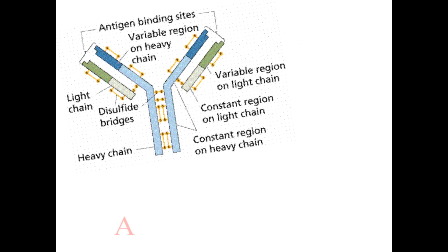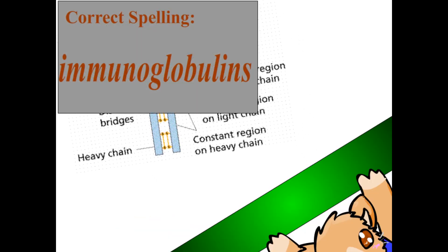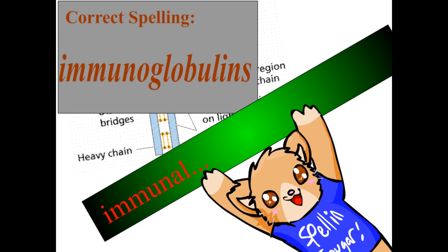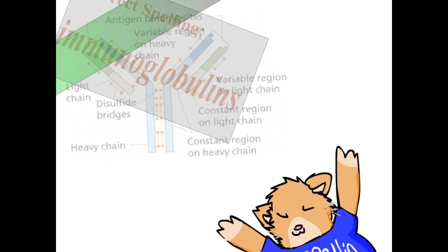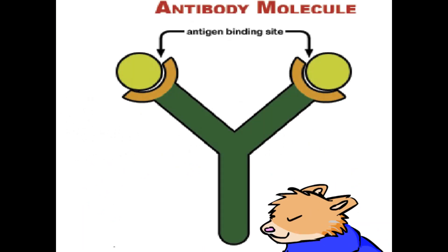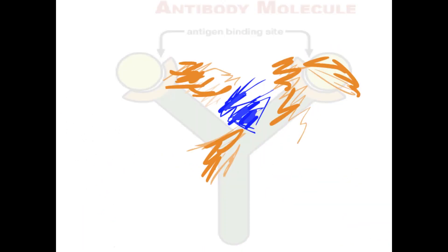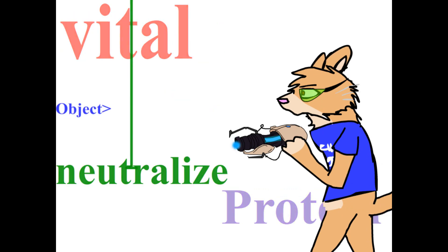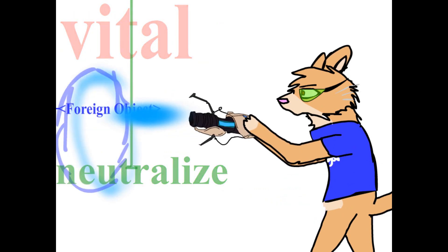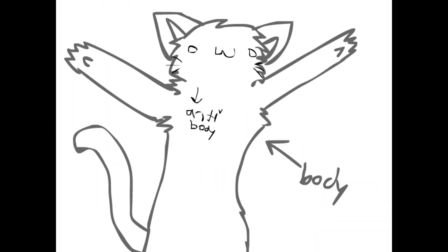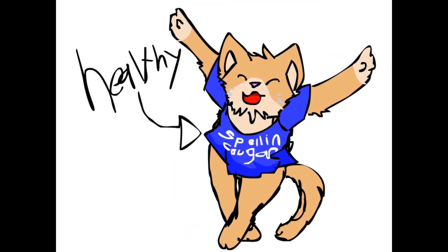This is the structure of an antibody, or if you prefer to get scientific, immunoglobulin — a word I cannot pronounce. As you can see, it looks very boring, but it is a vital protein used to neutralize foreign objects, which means, basically in 9th grade terms, it is stuff in your body that keeps you healthy.